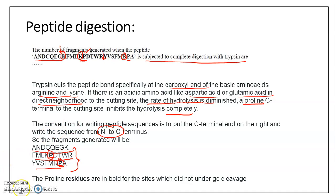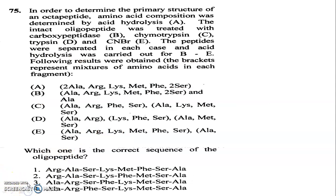Subjected to complete digestion with trypsin, three fragments will be produced. Proline residues inhibit the digestion process. Remember: trypsin cuts lysine and arginine C-terminal, but proline inhibits that step.